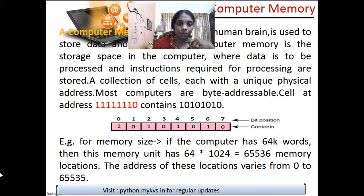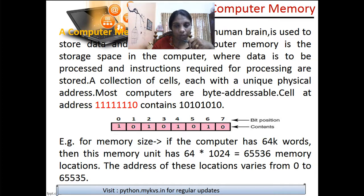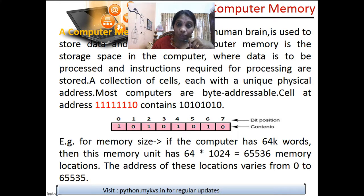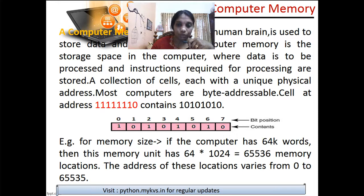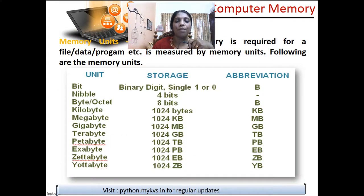When you count in mathematical style, you start from one, but in computers, counting always starts from zero. These individual one-or-zero areas are called bits. A combination of eight bits forms a byte. If you want to calculate the memory size — for example, it has 64K words — the unit is measured in 1024 bytes. So 64 multiplied by 1024 gives you 65,536 memory locations. This leads us to the next section: memory units.